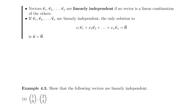We are more interested in the case that is the opposite of what we saw in the last example, which is when vectors are linearly independent. This is going to happen when no vector is a linear combination of the others.